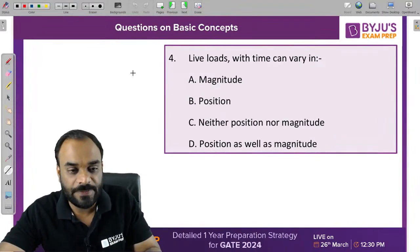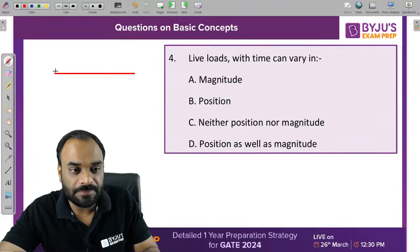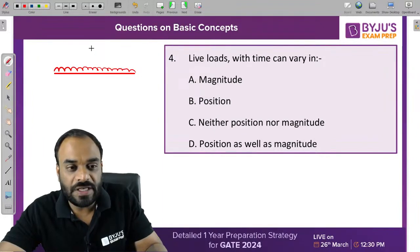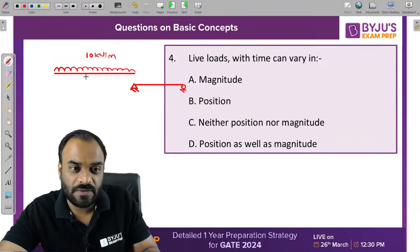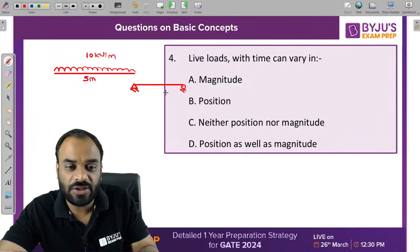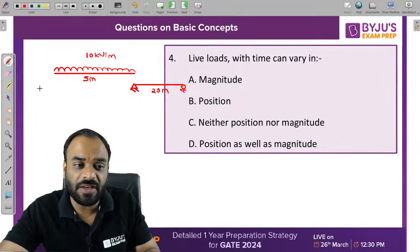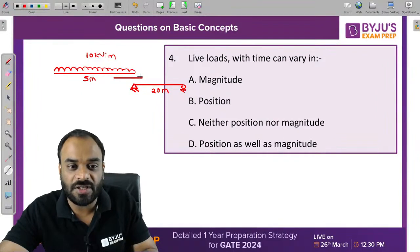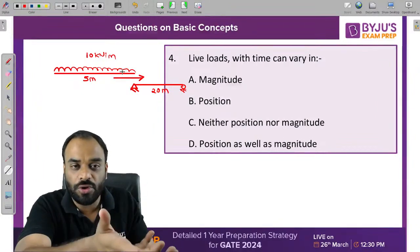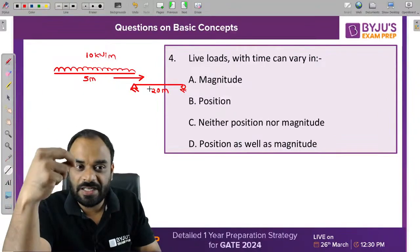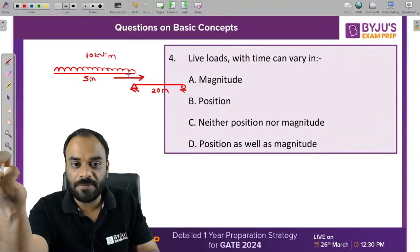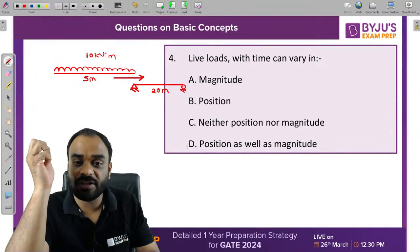Consider a UDL of intensity 10 kN per meter on a simply supported beam. The span is 20 meters but the UDL covers only 5 meters. If you shift this load along the beam, the amount of load changes continuously — meaning the magnitude is changing. The position is also changing. That's why the correct answer is D.